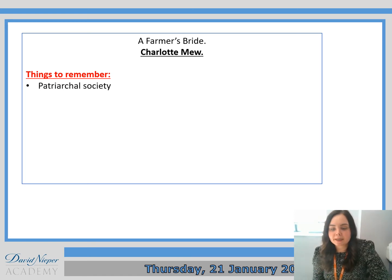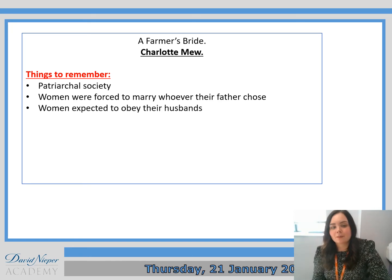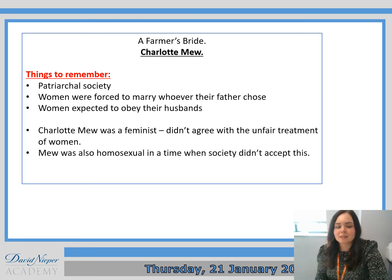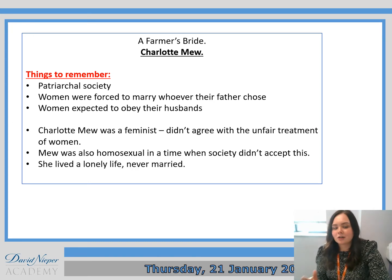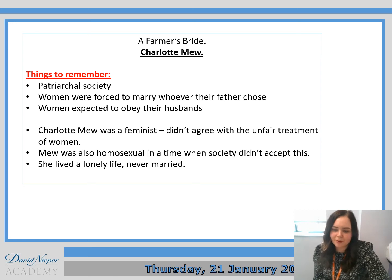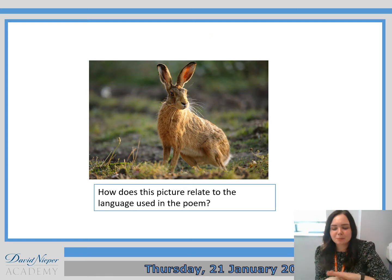The things to remember: obviously the patriarchal society was still in place — women were forced to marry whoever their father chose and were expected to obey their husbands. Charlotte Mew was a feminist; she didn't agree with any of that treatment. Mew was also homosexual in a time when society didn't accept this. She lived a lonely life, she never married, and she disagreed with the society that she lived in, but she couldn't really do much about it because she wasn't accepted as a person. So how does this picture relate to one of the quotations from the poem, please?